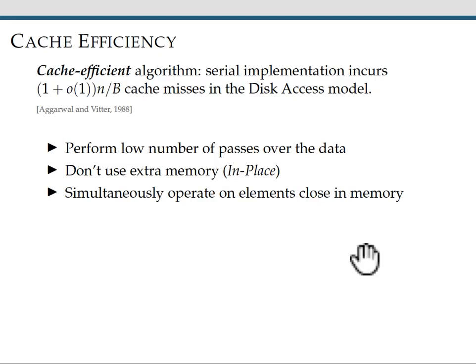A cache-efficient algorithm is an algorithm whose serial implementation incurs (1 + o(1))n/B cache misses in the disk access model. In order to be cache efficient, an algorithm has to perform a low number of passes over the data, not use extra memory, and simultaneously operate on elements that are close together in memory.